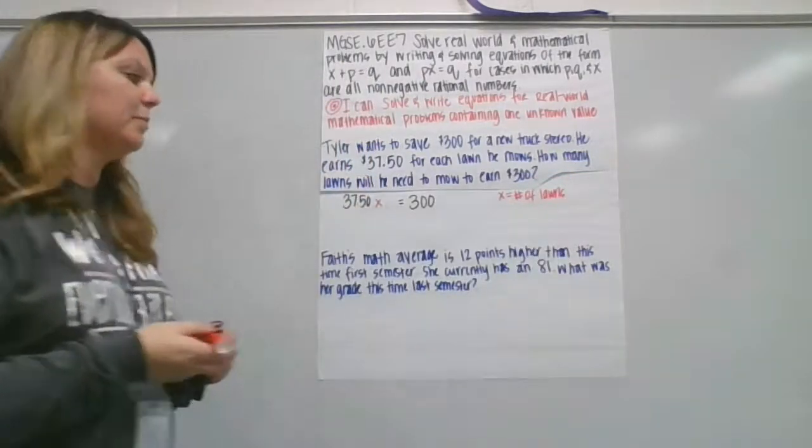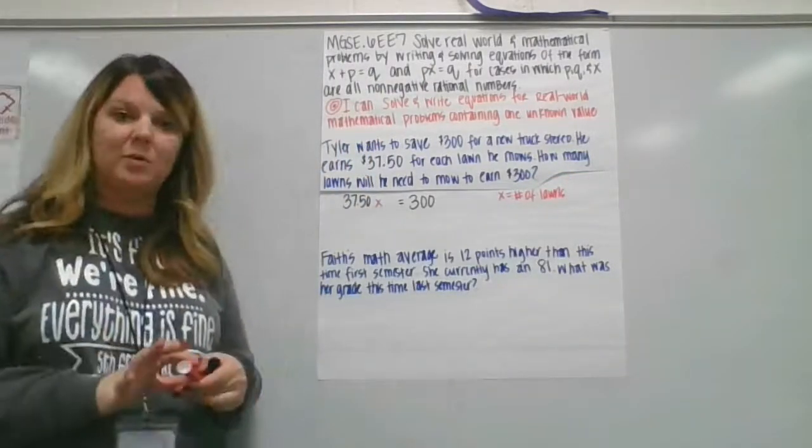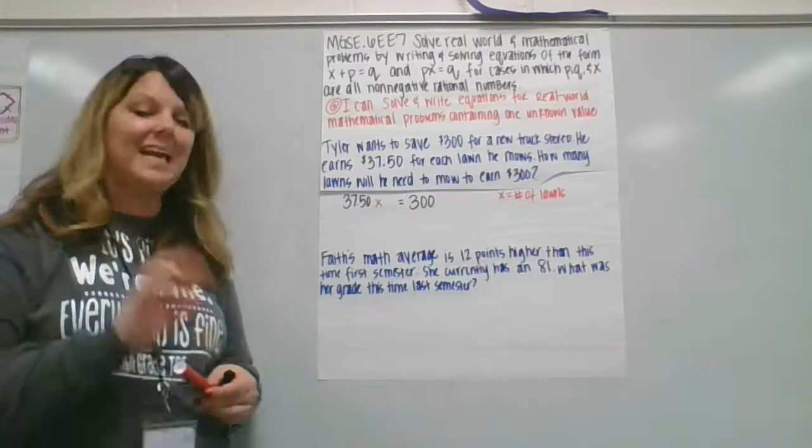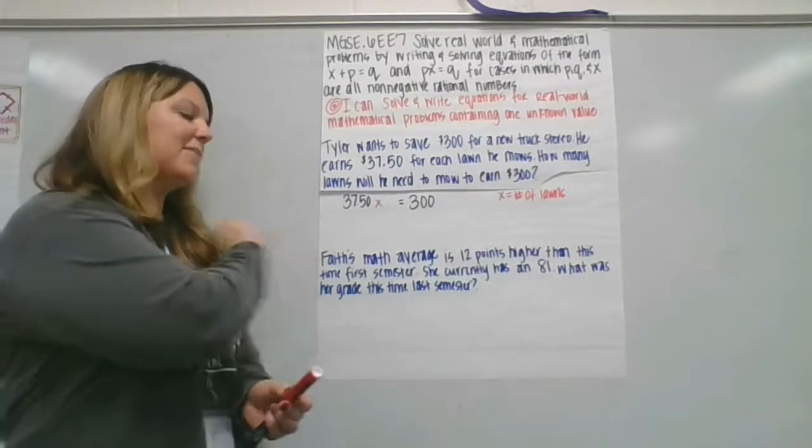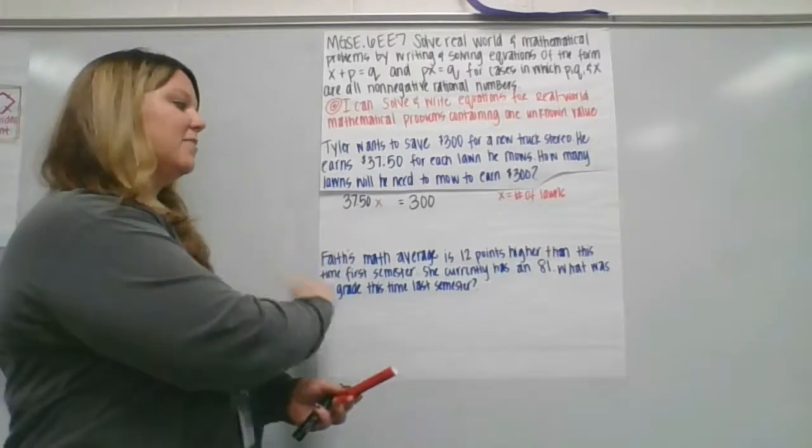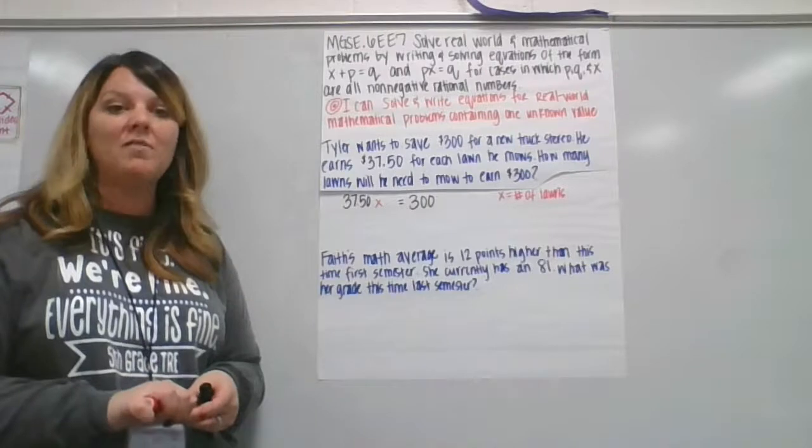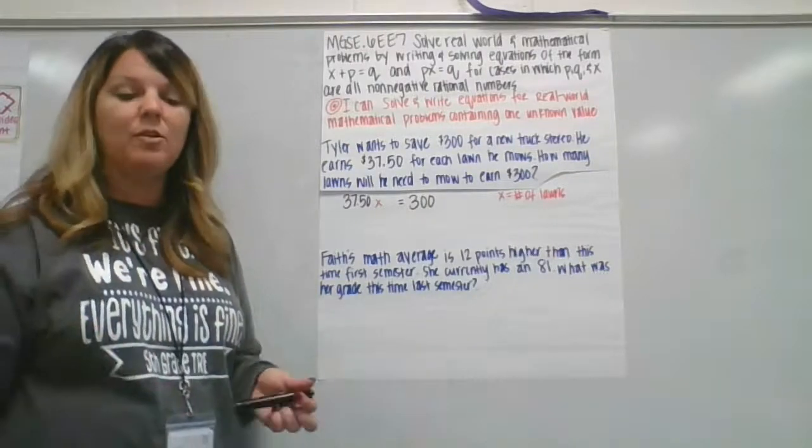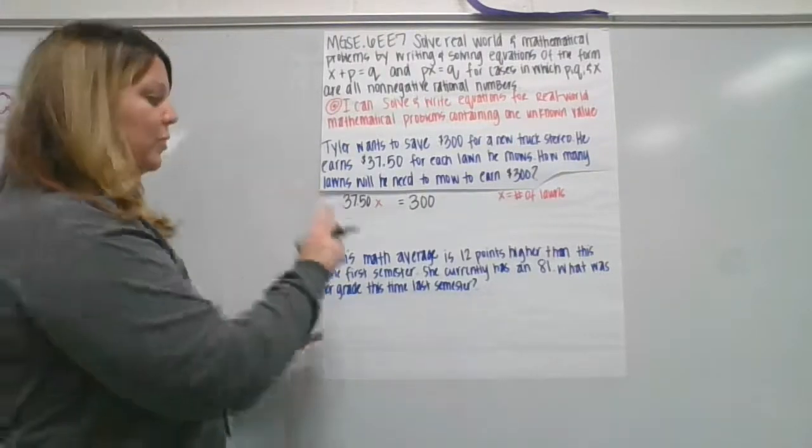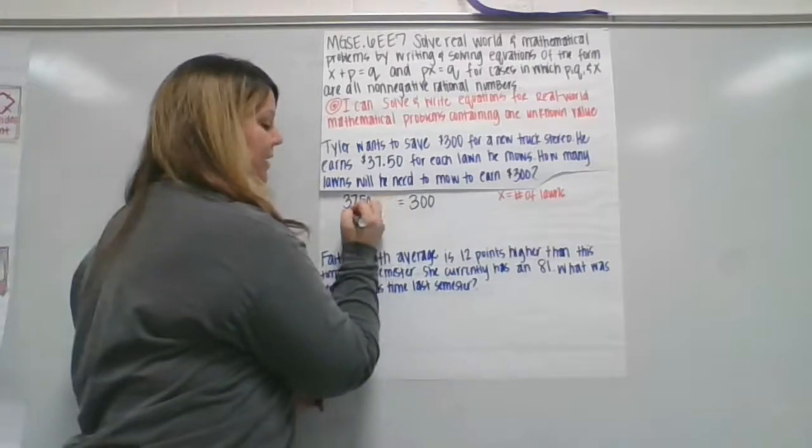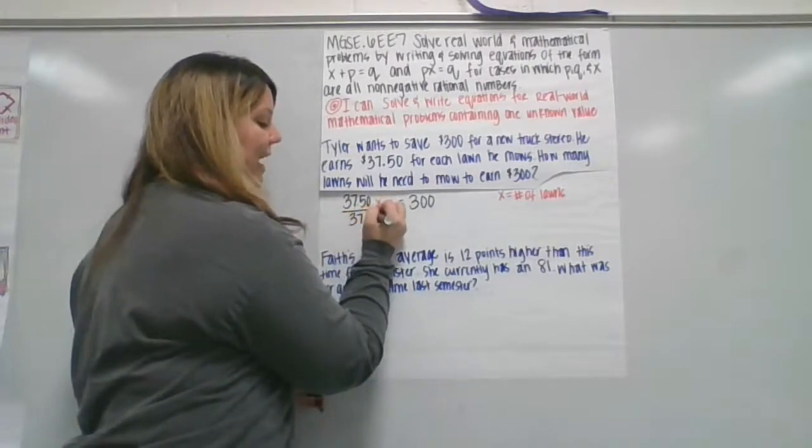So the way that we solve a problem like this, this is called a one-step equation, and we solve it using an inverse operation. The operation that we have here currently is $37.50 times x. It's a multiplication problem. We're going to solve that using division by dividing by $37.50 on each side so that we isolate our variable.